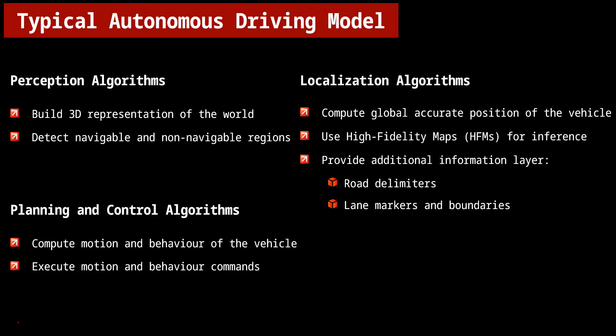Usually, autonomous driving requires three key algorithmic pipelines. Perception algorithms process sensory data and build the 3D representation of the world around a vehicle. Simultaneously, localization algorithms compute the global accurate position of the vehicle on road against what we call high fidelity maps, or HFMs. Then planning algorithms compute the motion and behavior of the vehicle, and the motion and behavior commands are executed by the vehicle's controllers.